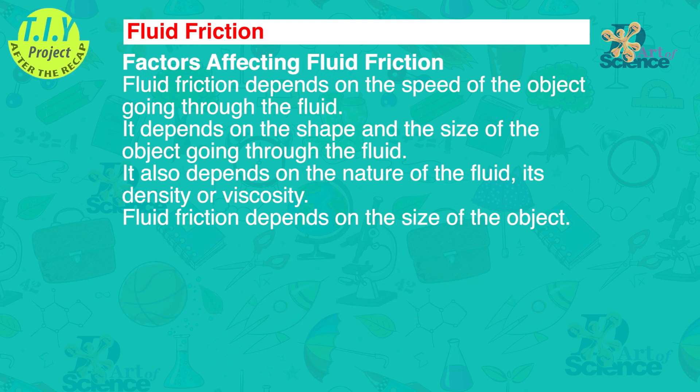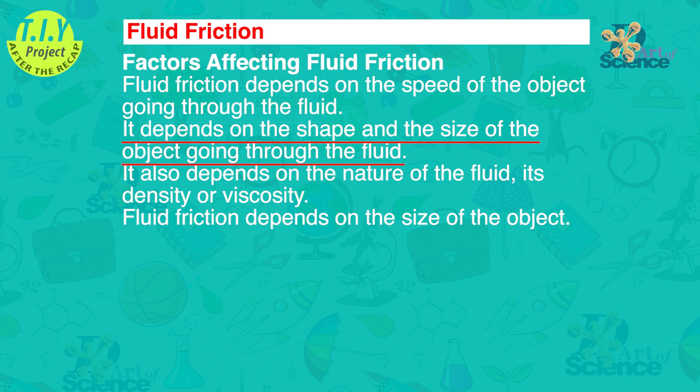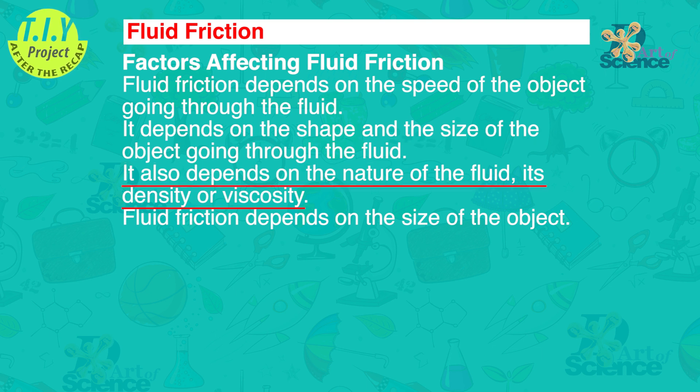Factors affecting fluid friction: Fluid friction depends on the speed of the object going through the fluid. It depends on the shape and the size of the object going through the fluid. It also depends on the nature of the fluid, its density or viscosity. Fluid friction depends on the size of the object.